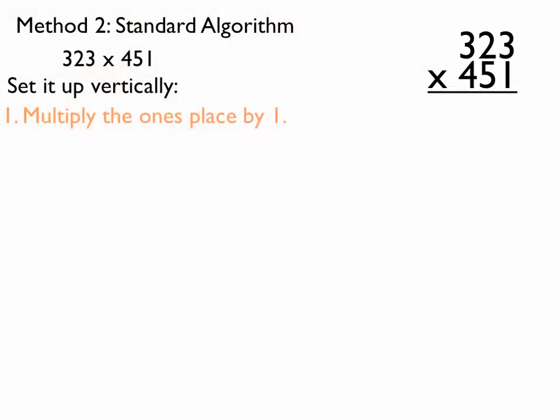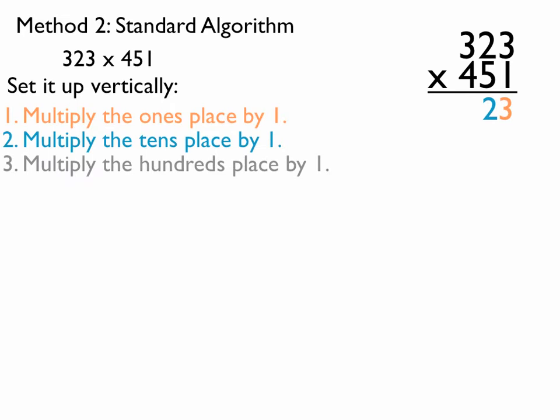First thing we need to do is multiply the ones place by 1. So, 3 times 1 gives me 3. Multiply the tens place by 1. So, 2 times 1 gives me 2. And multiply the hundreds place by 1. That, again, is going to give me 3.